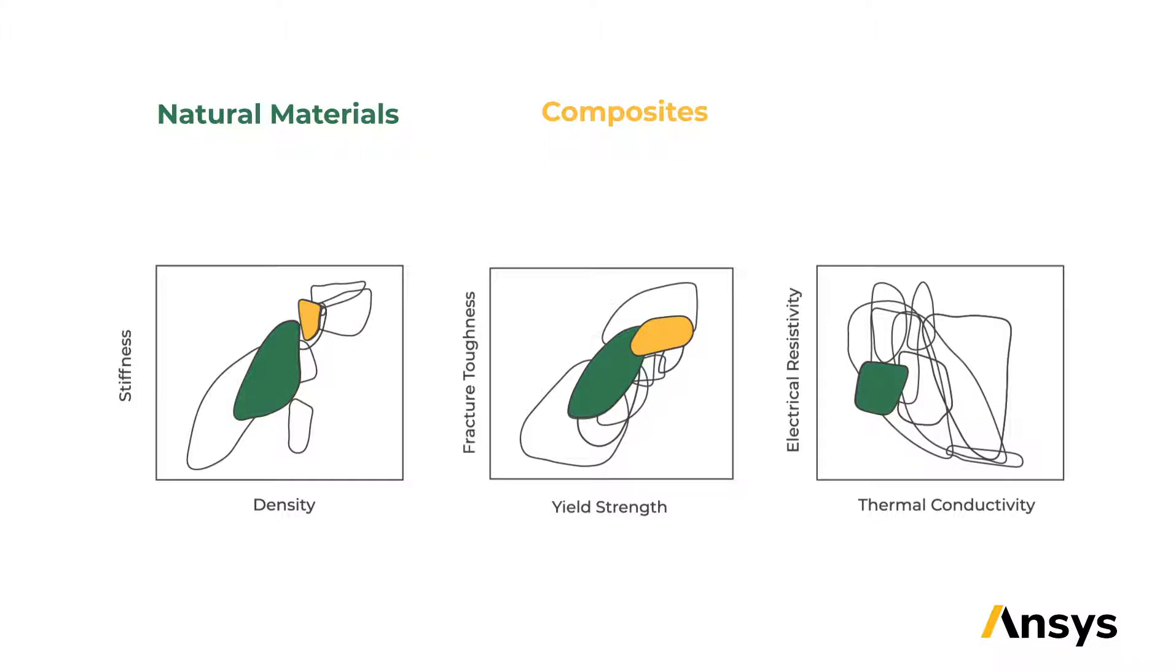Composites have a wide range for electrical resistivity and thermal conductivity. Due to the wide variety of materials that can go into making composites, this property has the most variability.